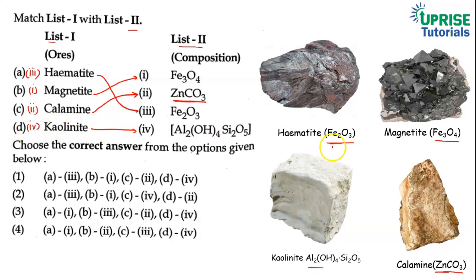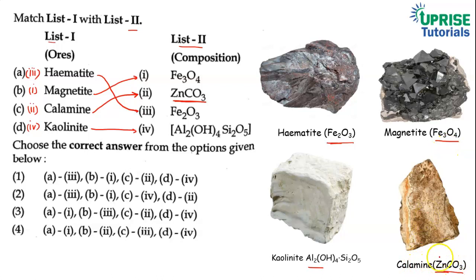To summarize: hematite jo hota hai, vah iron ka ek important ore maana jata hai aur iska formula Fe2O3 hota hai. Magnetite bhi iron ka hi ore maana jata hai aur iska formula Fe3O4 hota hai. Calamine jo hota hai, vah zinc ka important ore maana jata hai. Aur kaolinite jo hota hai, vah aluminum ka ore maana jata hai.